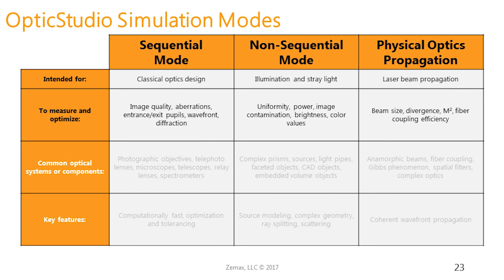To wrap up, I want to emphasize choosing the mode or analysis based on what you're going to be measuring. Although you can model the same system in different modes — for example, a laser coming into a lens and coming to a focus — the mode you choose depends on what you are measuring. If you want to look at the M-squared beam quality factor, use physical optics propagation. If you care about uniformity at a plane or on a different object, use non-sequential mode. If you care about minimizing specific aberrations like coma, use sequential mode because it will be much more efficient there.